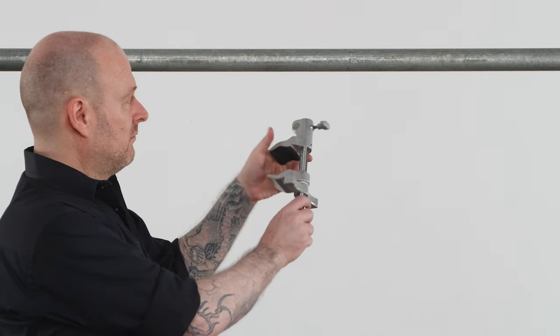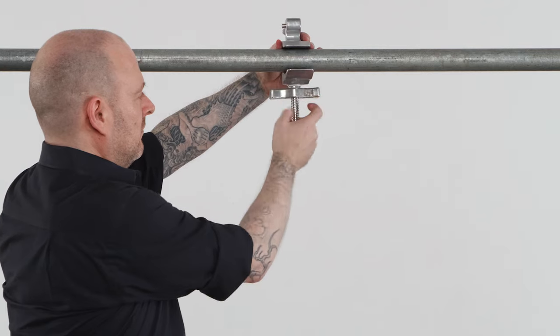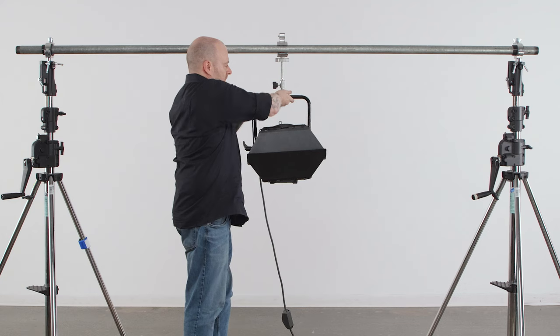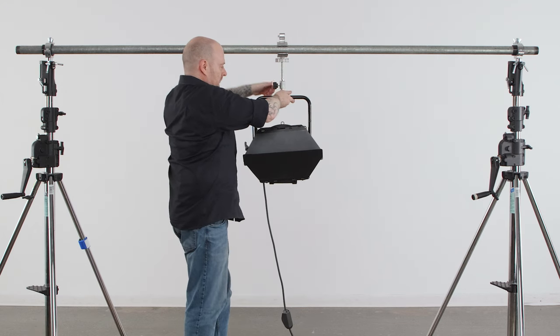Open the jaw of the six inch supervisor clamp. Secure the clamp on the pipe where you'd like by turning the handle clockwise until tight. Now we'll slide the baby receiver of our Arri 1K Fresnel on the pin. Tighten the knob to secure in place.